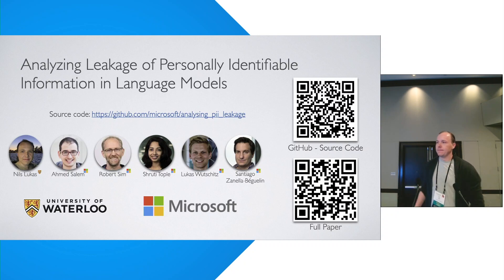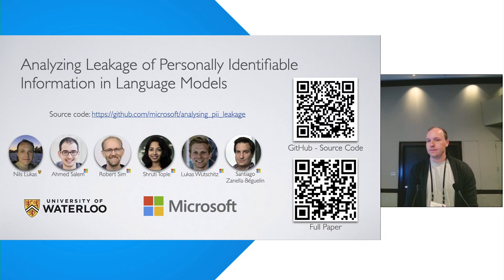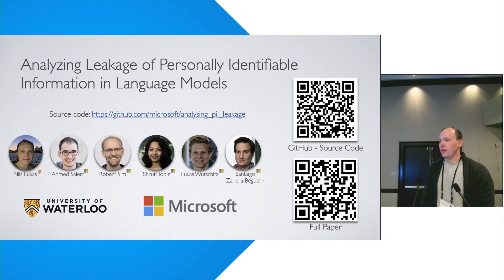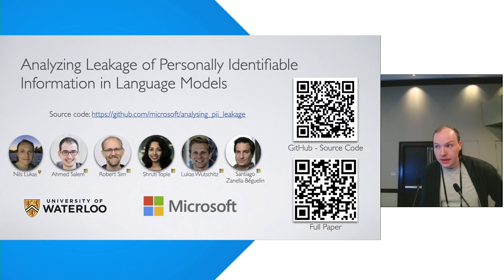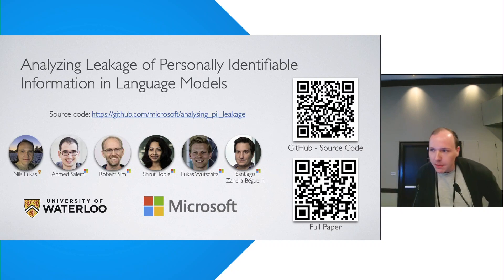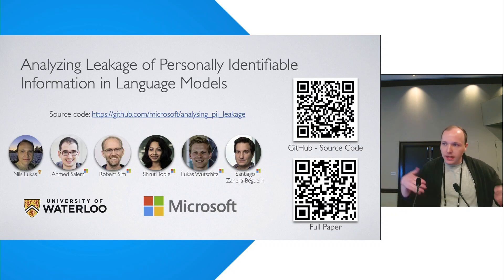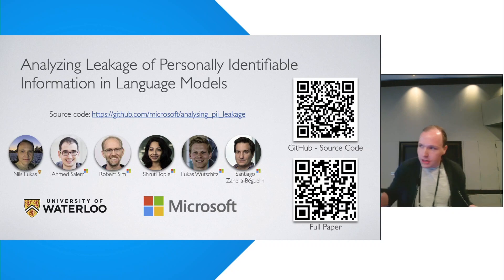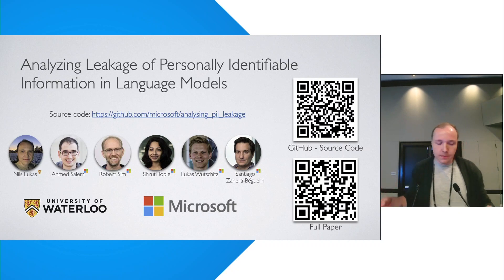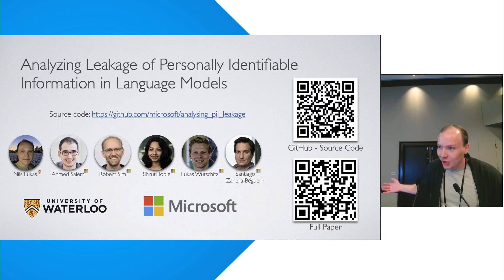Question from the audience: when you talk about differential privacy with epsilon 8, is that an appropriate value — isn't it too high to provide real privacy? The speaker responds: in our paper we motivate using epsilon equals 8 because we find real deployed systems that actually use this value in practice. However, since we can extract data, it's likely not a good value and lower values should be used. But using lower values like epsilon equals 4 or 2 runs further into the problem of destroying the model's utility.